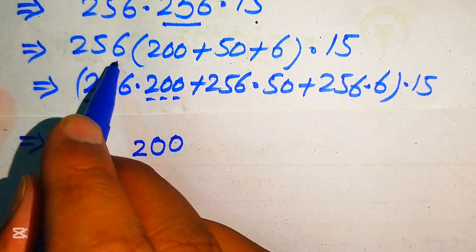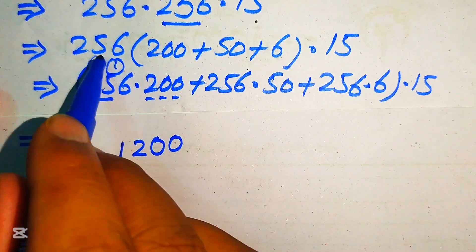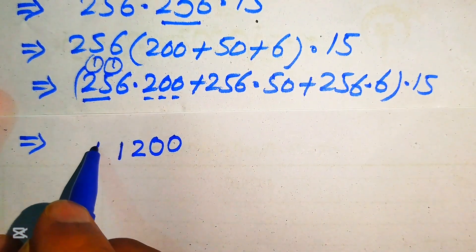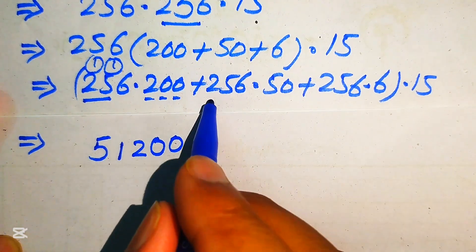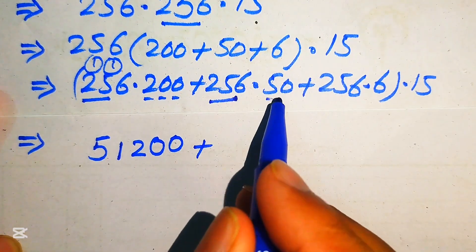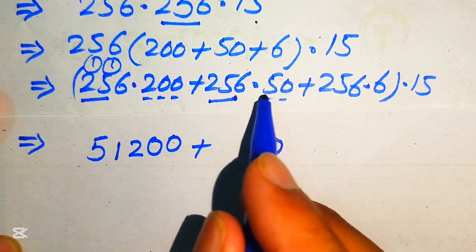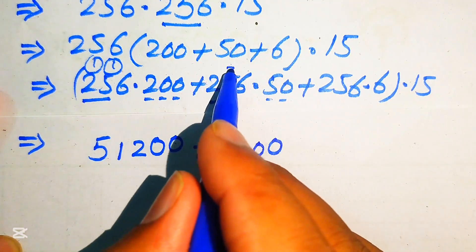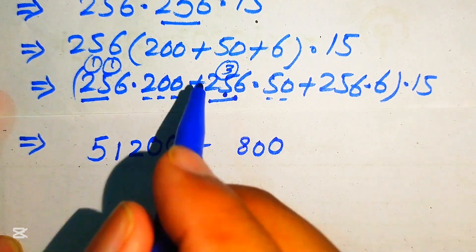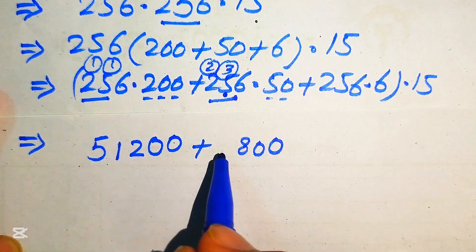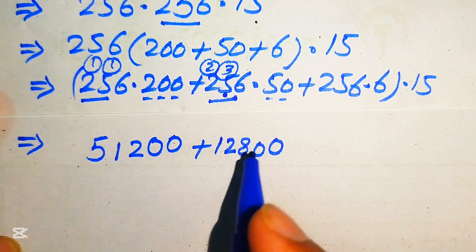For 256 × 50: multiplying by 0 gives 0; then 5 × 6 = 30, write 0 carry 3; 5 × 5 = 25 plus 3 = 28, write 8 carry 2; 5 × 2 = 10 plus 2 = 12, so we get 12800. Therefore 256 × 50 = 12800.